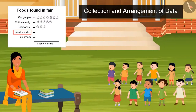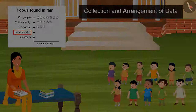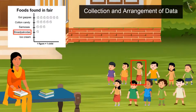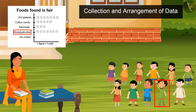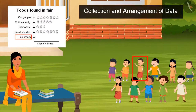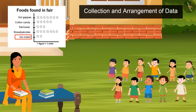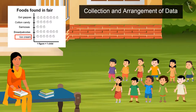Who all wants to eat bread pakoras? One, two, three, four, five, six, and seven. Who all wants to eat ice cream? One, two, three, four, five, six, seven, and eight.